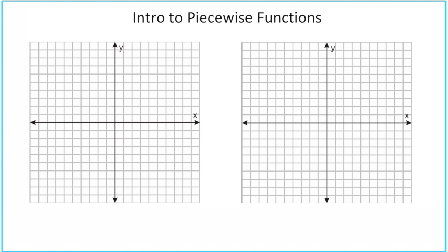Let's start by graphing a line: y equals 2x minus 1. This is in y equals mx plus b form, so we start with our y-intercept at negative 1. Our slope is 2, or 2 over 1, so from that point we go up 2 and right 1 to get more points, and also down and to the left, finishing it off as a line.